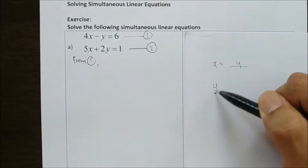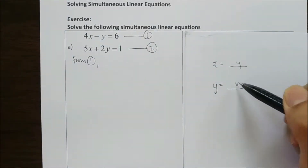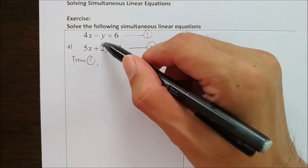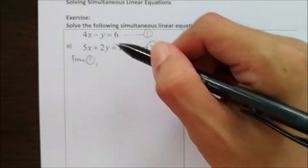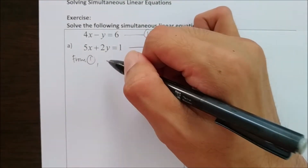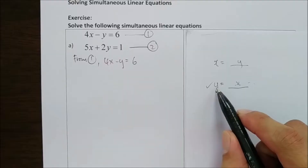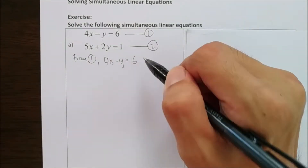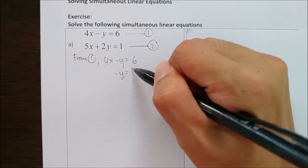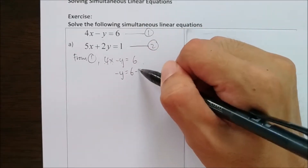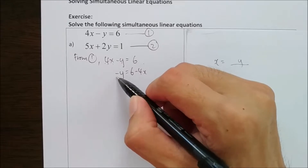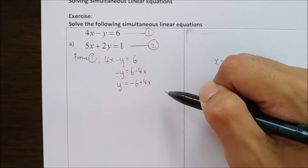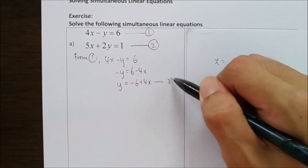Or I form y as a subject, with x and the values on the other side. I pick whichever is easier. For this, I'm going to let y equal to something. From equation number 1, I rewrite it — I want y to be the subject. I move the rest to the right-hand side, so I get negative y equals 6 minus 4x, which becomes y equals negative 6 plus 4x. This will be my equation number 3.